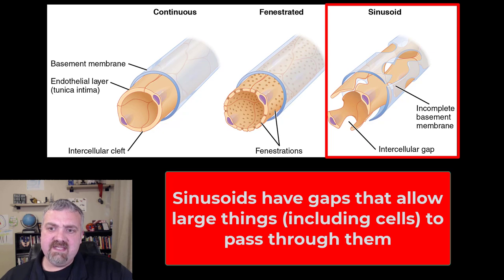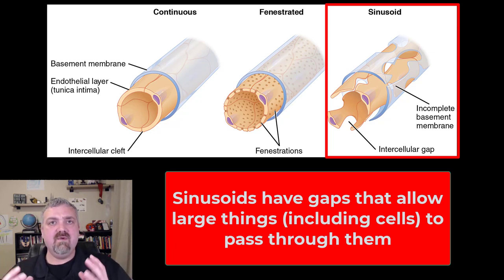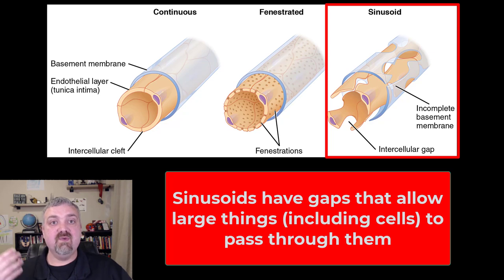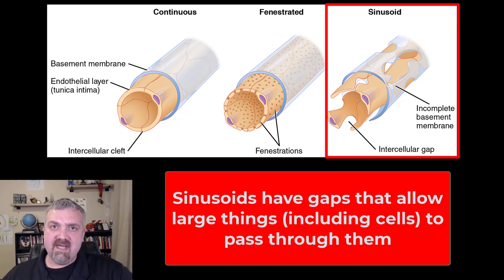One last thing about sinusoids: these openings are so large that lots of good things can get through, but it also means potentially bad things can get through too. So it's key to remember that sinusoids are going to be lined with macrophages. Macrophages are immune cells — cell eaters — that will engulf things that shouldn't be there and warn your immune system if things are showing up that shouldn't. So because of these large openings we're vulnerable, and that's why sinusoids are lined with macrophages.